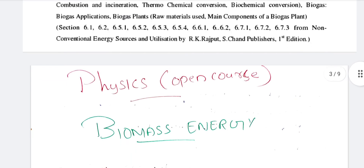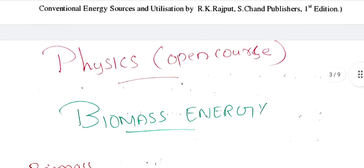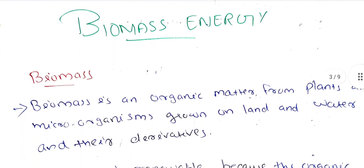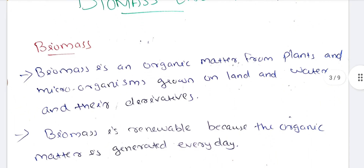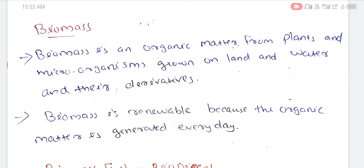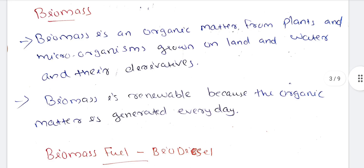This is the 2nd part of the video. Biomass is an organic matter from plants and microorganisms, grown on land and water and their derivatives. Biomass is renewable because the organic matter is generated every day, so it is a renewable source of energy.